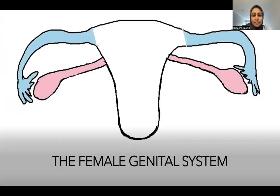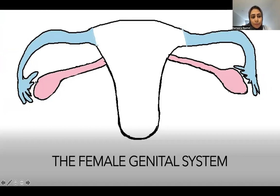This is what the female genital system looks like. The uterus is in the middle. Attached at the corner of the uterus on both sides are the fallopian tubes, shown in blue. The fallopian tubes rest on top of the ovary, shown in pink, and the ovary is hanging by the side of the uterus by the utero-ovarian ligament.